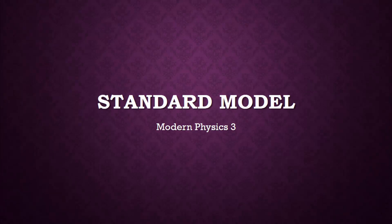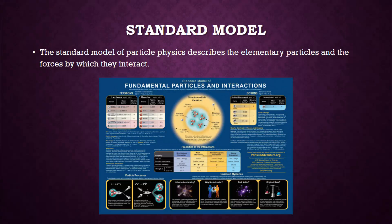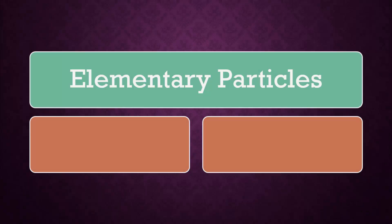The final lesson in modern physics is about the Standard Model. The Standard Model of particle physics describes the elementary particles and the forces by which they interact. Elementary particles are the smallest constituents of matter.